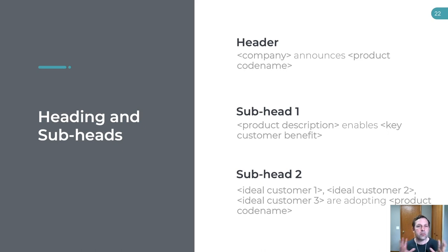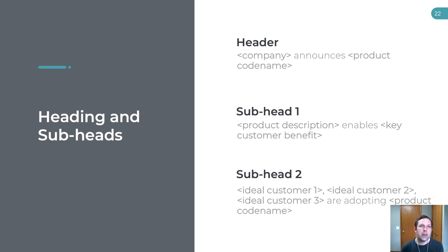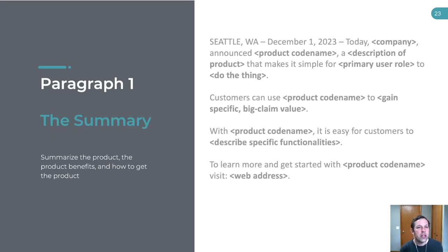Digging into the heading and subheads: the heading can just be 'Company announces [product code name].' Product code names are important during the research and pitching process because you don't want to bias the people reviewing your product with an actual descriptive or suggestive name. Having a product code name — which could just be the name of a fictional spaceship or a plant — is going to help people keep an open mind about what the product could be. For the subhead, you can use the one-sentence value proposition or a template like 'product description enables key customer benefit.' And for subhead two, you can take the org type from the messaging framework and list some of the key customer types, which helps a reader understand the type of customers suitable for the product.